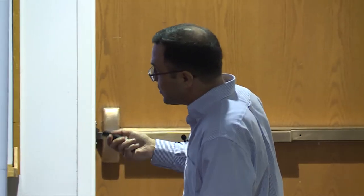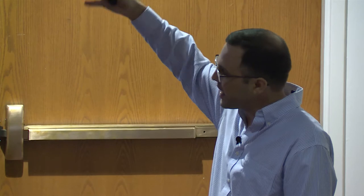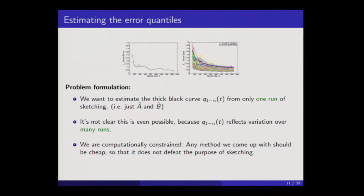This quantile curve is my target for estimation — think of this curve as an unknown parameter, the sketches as my data, and I'll try to use that data to estimate the curve. But there are restrictions in the context of randomized NLA. I don't want to run the sketching algorithm many times — only once or twice. That may make it seem like this problem is too hard to solve, since the quantile curve arises hypothetically from many repeated runs. The question is whether there's enough information in just a sketch of A and B to get at this curve. There's another constraint: whatever method I come up with should be inexpensive enough not to outweigh the benefit of doing sketching in the first place.